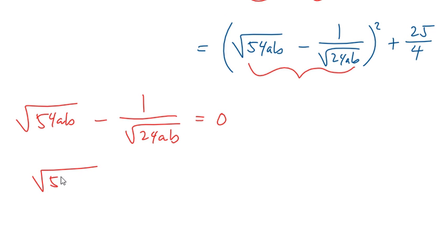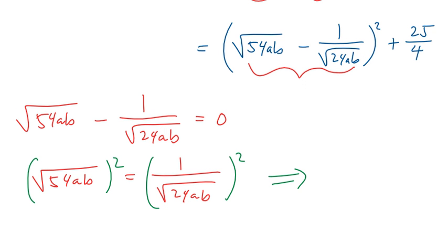Then, we have √(54ab) = 1/√(24ab). Squaring both sides, we have 54ab = 1/(24ab).